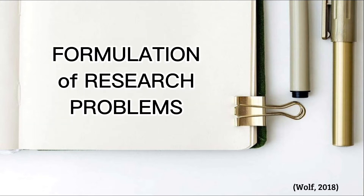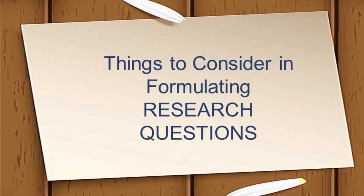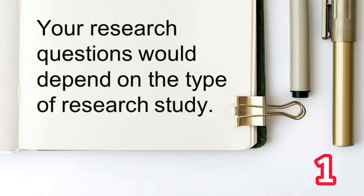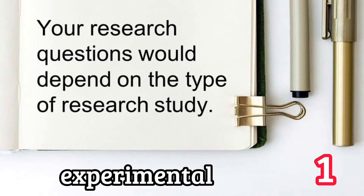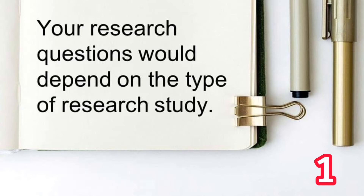Formulation of a research problem is the first and important step of the research process — it is like the identification of a destination before undertaking a journey. Here are the things to consider in formulating your research questions or problems. First, your research questions would depend on the type of research study. Before writing the research questions, be sure to know if your research study is correlational, experimental, descriptive, etc. The way you frame your questions and how many there are depends on the type of research.